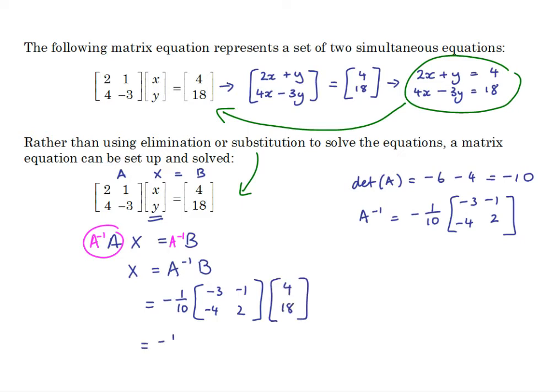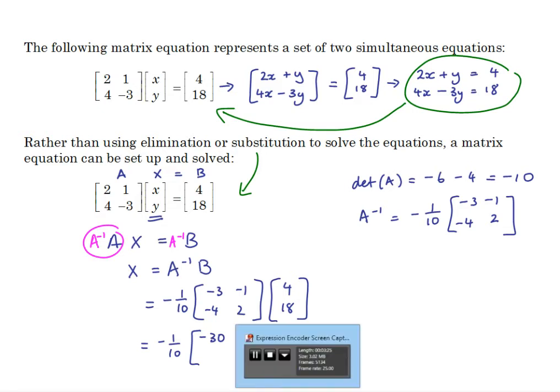Let's do the matrix multiplication. 2 by 2 times 2 by 1 should give us 2 by 1. Top row by column so negative 12 minus 18 that's minus 30. Bottom row times column negative 16 plus 36, so that's the same as 36 minus 16 which is 20.